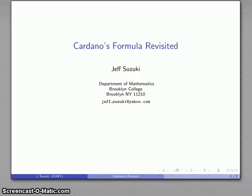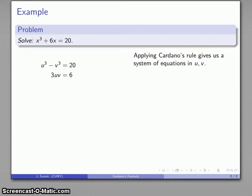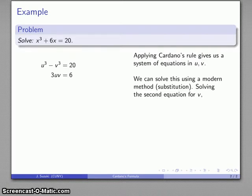We can also solve cubic equations using a somewhat modernized form of Cardano's rule, although it turns out the modernized form is actually slightly more complicated. So again, we have our cubic equation, x cubed plus 6x equals 20, and again, Cardano's rule will give us a system of equations in u and v. This time, we'll use substitution.